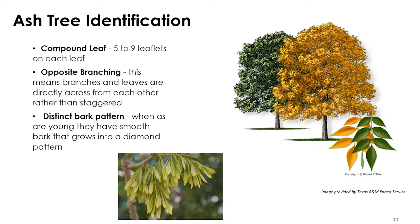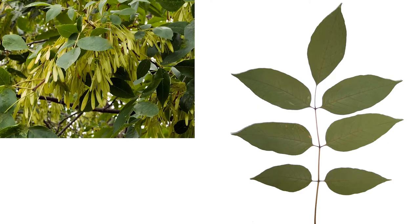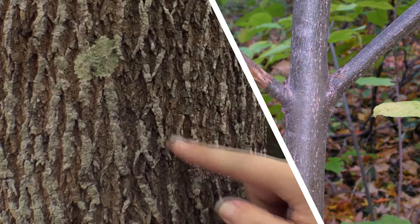Possibly the easiest way to identify an ash tree is their distinct bark pattern. When ash trees are young, they have a smooth bark that grows into a diamond-shaped pattern. In Dallas, our main ash trees are green and white ash, but all ash are susceptible to EAB infestation. This next slide shows leaves and their seeds. Ash trees have a diamond-shaped bark pattern, and here's another photo showing that diamond-shaped pattern.